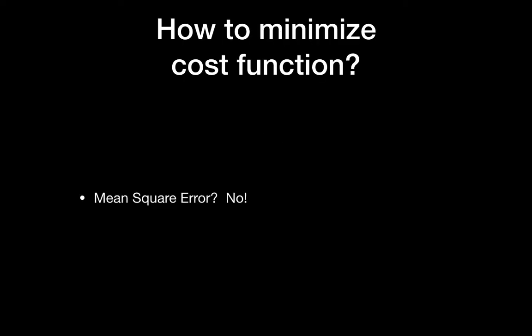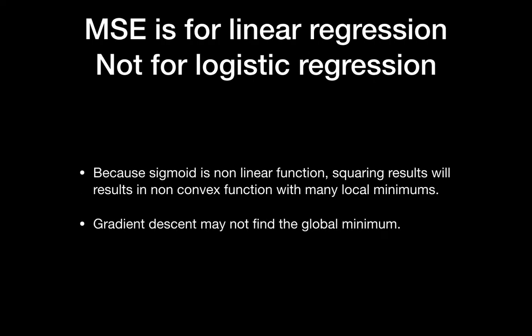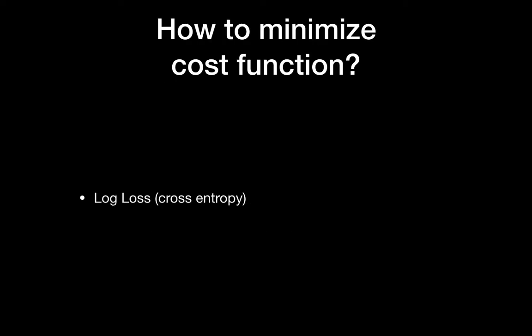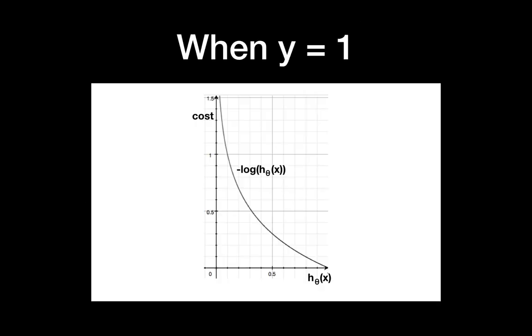How do we minimize the cost function? For linear regression we use mean squared error (MSE), but we do not use MSE for logistic regression. The sigmoid function is non-linear, and squaring its results produces a non-convex function with many local minima, meaning gradient descent may not find the global minimum. So instead we use log loss, which is exactly the same as cross-entropy.